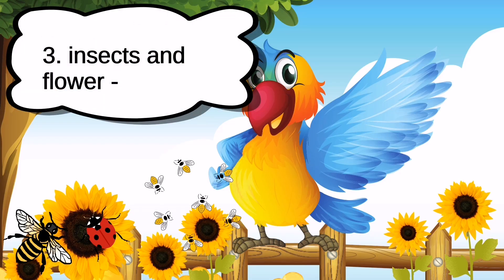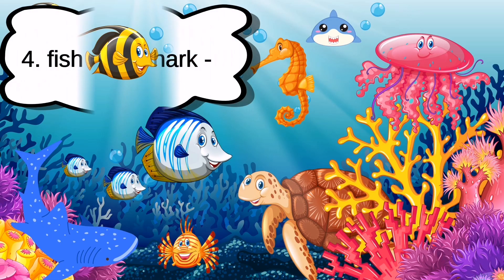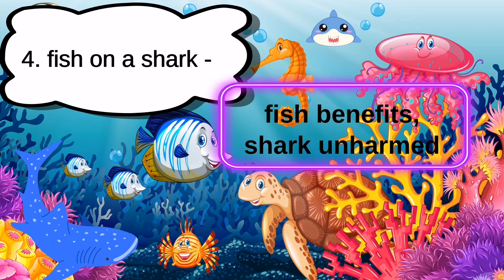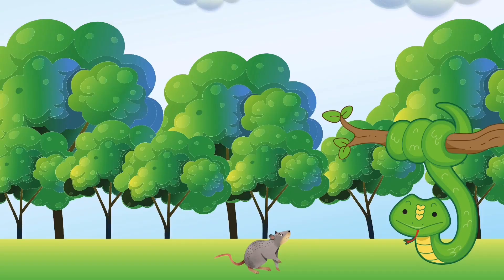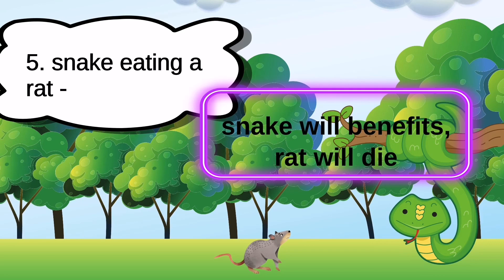Next is insects and a flower. What is the possible effect of this interaction? Very good — both the insects and the flower benefit. Next is a fish on a shark. What is the possible effect of these two interacting? Very good — the fish benefits and the shark is unharmed. And the last interaction — a snake eating a rat. What is the possible effect? The snake will benefit and the rat will die.